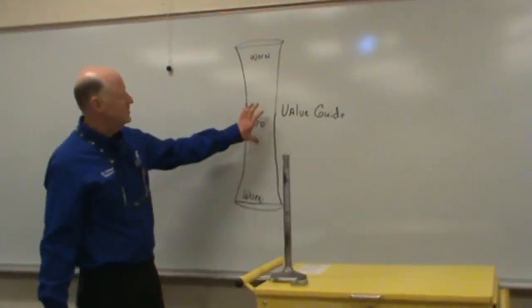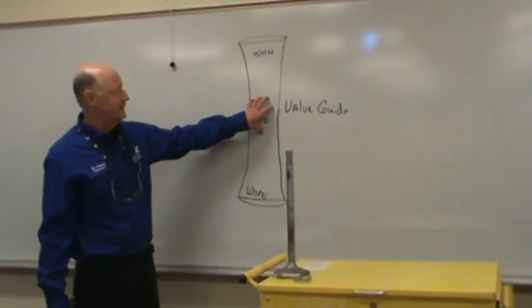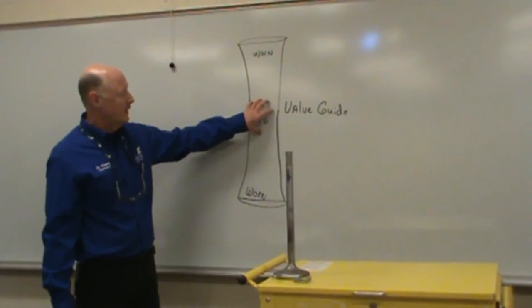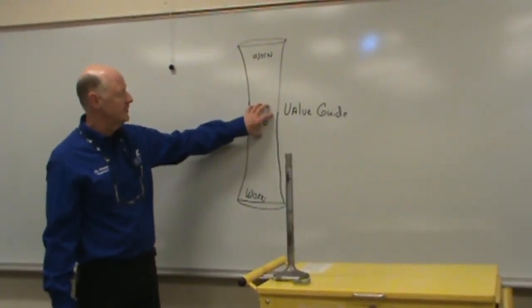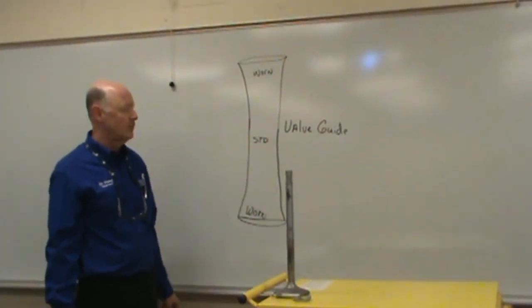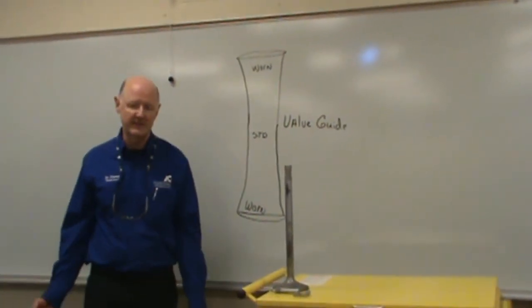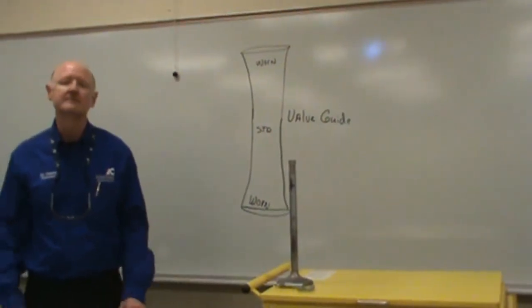So this is a measurement that you've got to get right, that cannot be below the minimum specification, which is about a thousandths and a half to two thousandths, exhaust being a little bit more. Exhaust on diesels are about three thousandths of an inch for heat expansion.